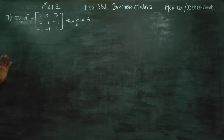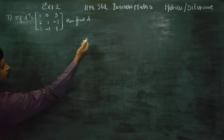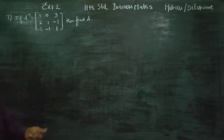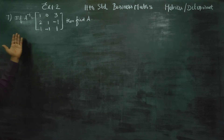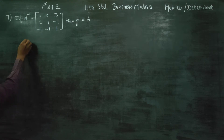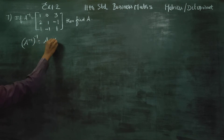To find A from A inverse, the formula is: the inverse of A inverse is equal to A. That is, (A⁻¹)⁻¹ = A. This is the formula we will use.